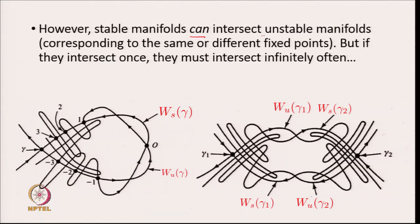Stable manifolds can intersect unstable manifolds — corresponding to the same or different fixed points — but with a caveat: if they intersect once, they must intersect infinitely often. Here is an example of a homoclinic intersection. Point O is at the intersection of the stable and unstable manifolds of gamma. O lies at the fixed point in both the infinite past and infinite future. Translated one step in time it reaches another intersection point, which is again on both manifolds.